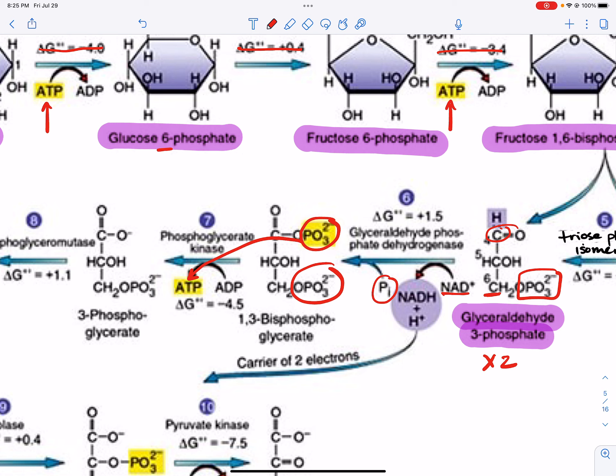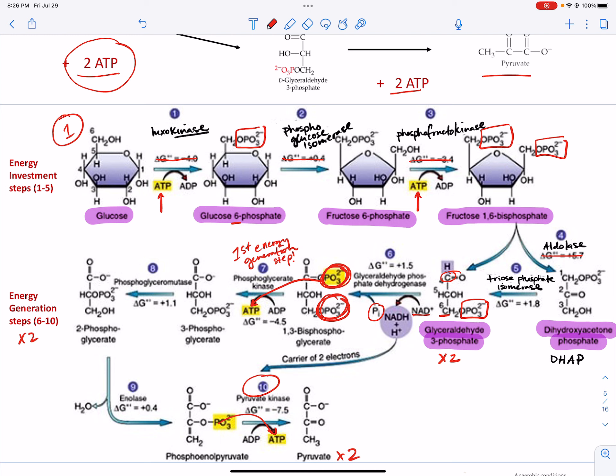That's the overall rundown of glycolysis. If you have any questions about what you need to know, shoot me an email or write down your questions and pause the video. Know the enzyme names — which is why I rewrote them more clearly — and know the metabolite names we highlighted in purple for steps 1 through 5. And then know the overall net yields we talked about.